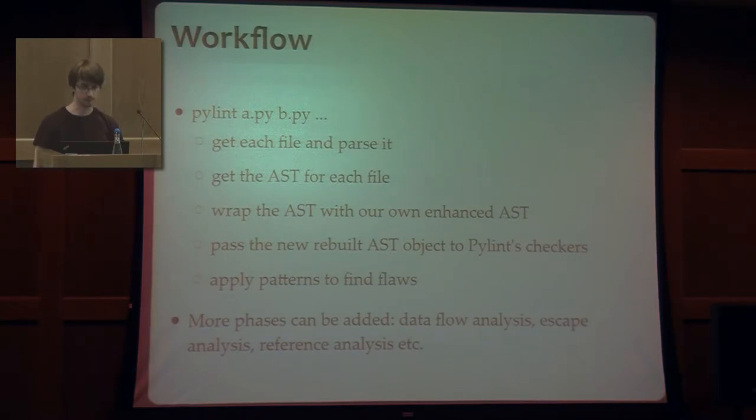Now, how PyLint actually does this stuff, how it detects all these kind of issues? Its workflow is quite simple. I mean, it's not so complicated. You pass it a file, or multiple files, or a project, or multiple projects, whatever. And what it does, it tries to get the AST for each file. Basically, the AST is a tree structure that represents your code. And then it will try to wrap that AST with our own AST, which is a lot better than the one provided by the Python standard library. And then we are passing these new objects to PyLint checkers, which they don't know nothing else than looking for patterns of bad code in these ASTs, which is not that difficult after all. And at this point, we can add a lot more phases, but they're irrelevant now.